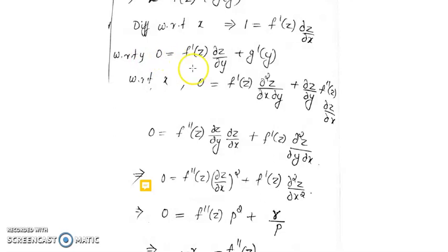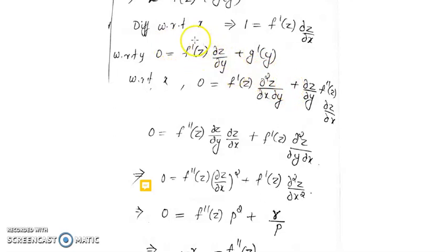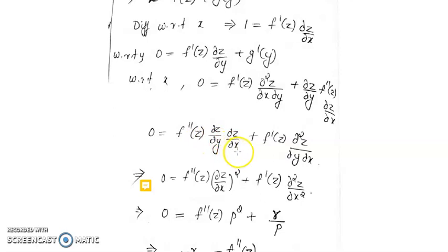Differentiating with respect to y gives 0 = f'(z)·(∂z/∂y) + g'(y). Differentiating again with respect to x, we get 0 = f'(z)·(∂²z/∂x∂y) + (∂z/∂y)·f''(z)·(∂z/∂x). So the result is: f''(z)·(∂z/∂y)·(∂z/∂x) + f'(z)·(∂²z/∂y∂x) = 0.